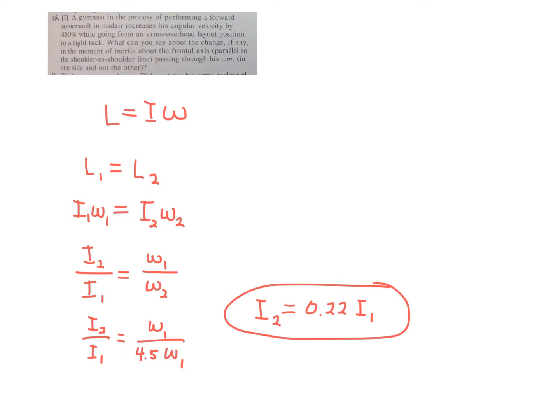So that's why I said 4.5 omega1 down here. I plugged in for omega2. You rearrange all this, the omegas cancel, and you divide to get the decimal, move things around.